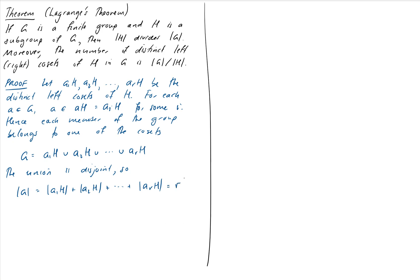Which is R times the order of H, because as we discussed with our coset properties, the order of any one of the cosets is just equal to the order of the subgroup.